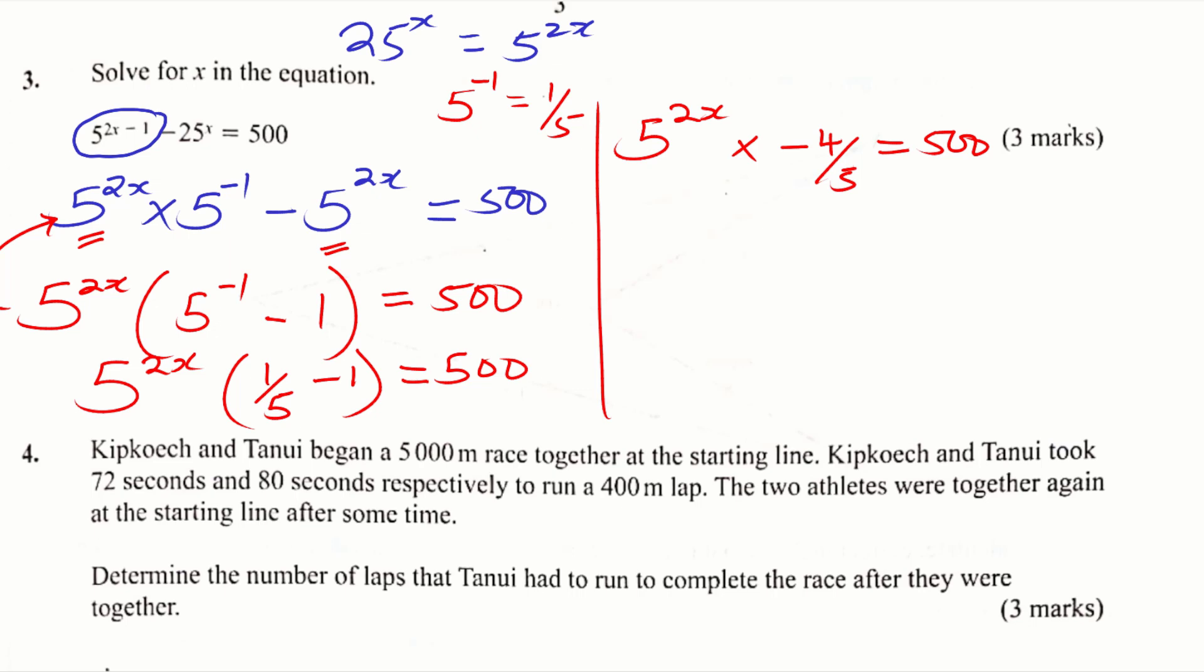Now since you are solving for x, we're going to eliminate negative 4 over 5 from the left hand side. To do that, we shall multiply both sides by the reciprocal of negative 4 over 5, which is negative 5 over 4. We do that. 5 raised to power 2x times negative 4 over 5 times its reciprocal, which is negative 5 over 4. Then on the other side, 500 times negative 5 over 4.